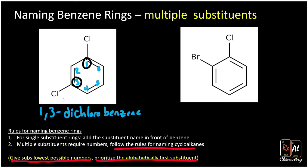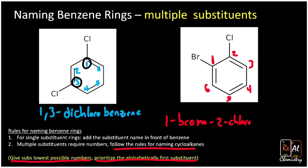On the right we have bromine and chlorine. Bromine comes first in the alphabet so we give bromine the one position. Chlorine gets the two — going the other direction would give chlorine a six, so we use this numbering. We list bromine first because it comes first in the alphabet: 1-bromo-2-chlorobenzene.